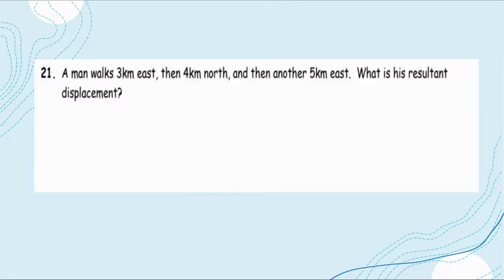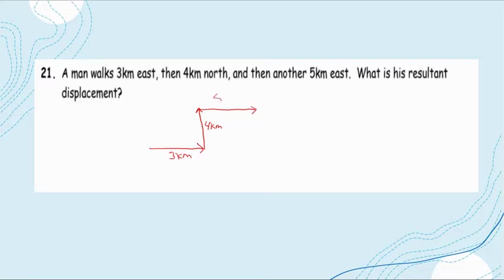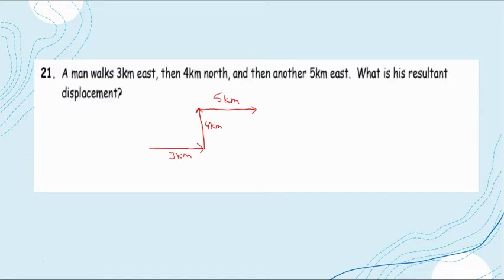Let's try another problem. A man walks three kilometers east, then four kilometers north, then another five kilometers east. What is his resultant vector? So he walks 3 km east, 4 km north, and another 5 km east. I'm going to change ink color for the resultant and for the x and y directions, going from the tail of the first vector to the head of the last one.